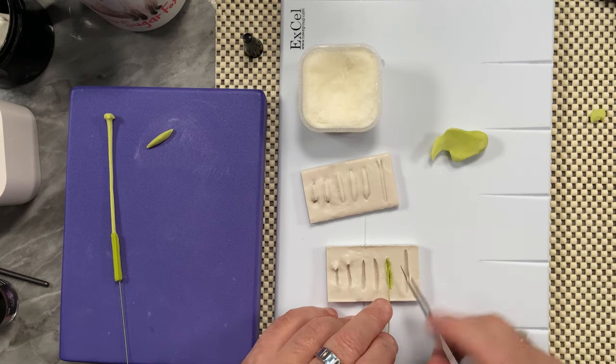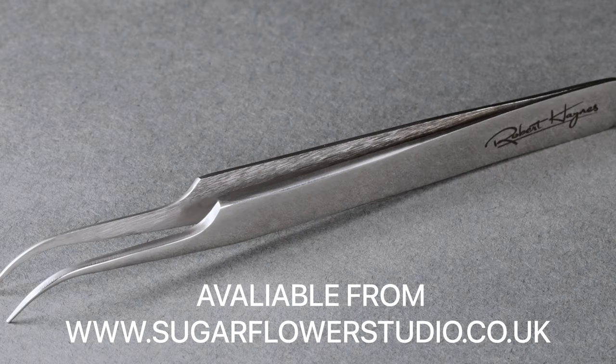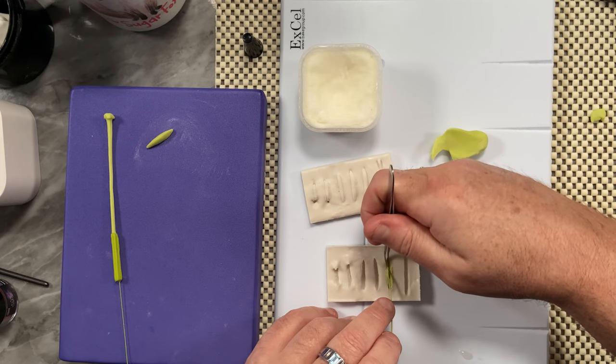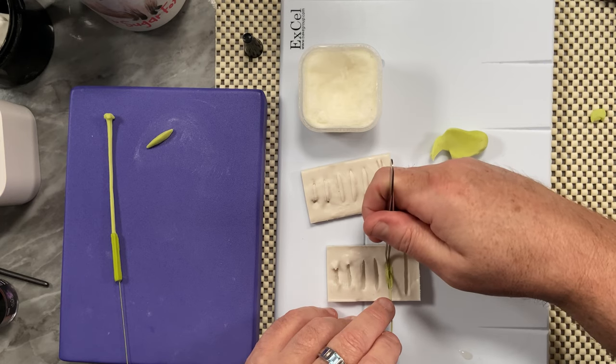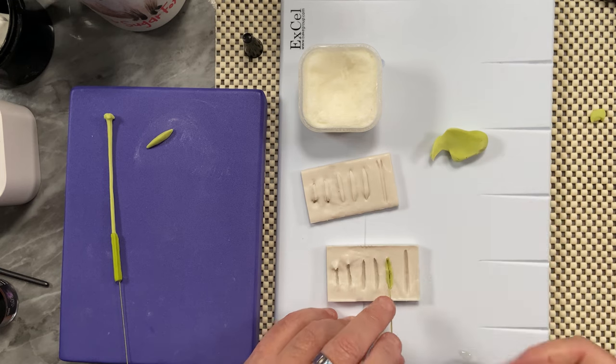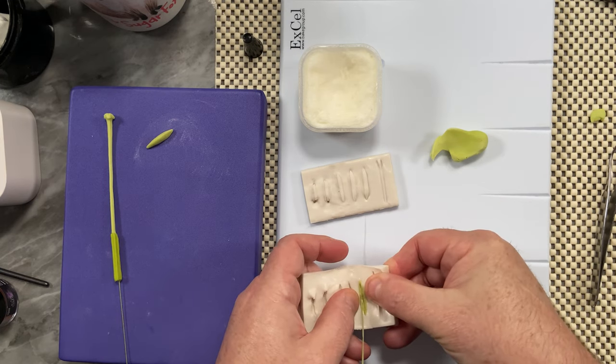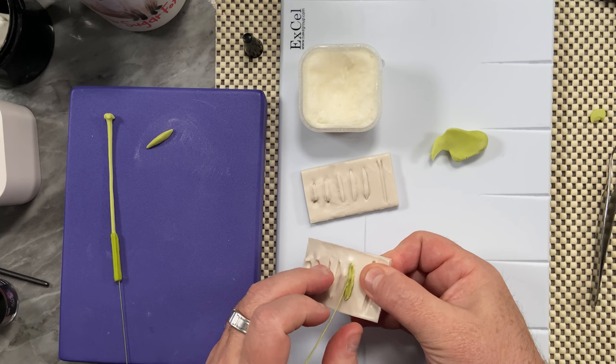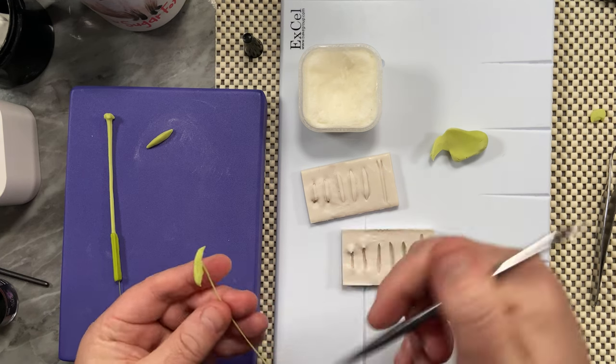I tend to use my tweezers to just kind of bring the excess paste over the back of the wire. That really secures it inside, and then open this right out. These are all of the natural markings from a real stamen.